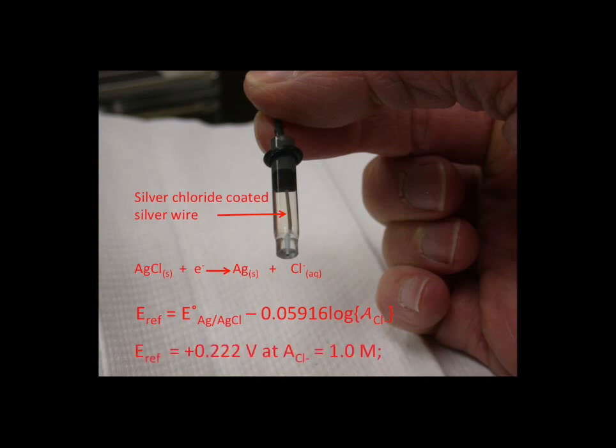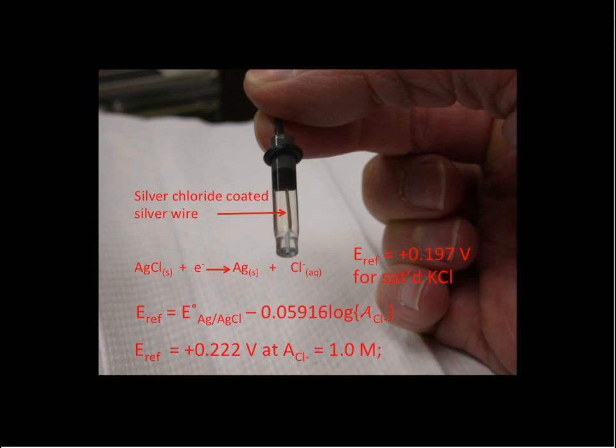At one molar silver ion activity, we get a reference potential of 0.222 volts. A popular way of setting the chloride activity is to use saturated potassium chloride, and that produces a reference potential of positive 0.197 volts.